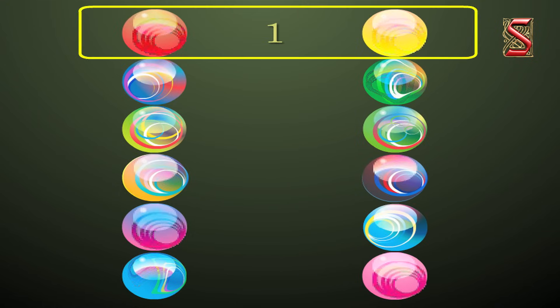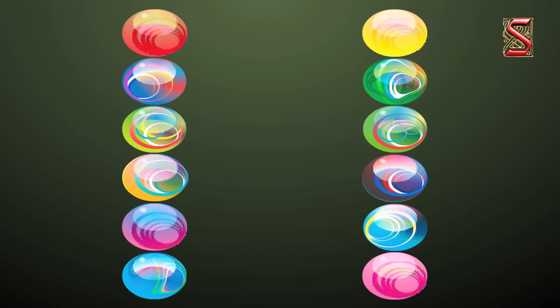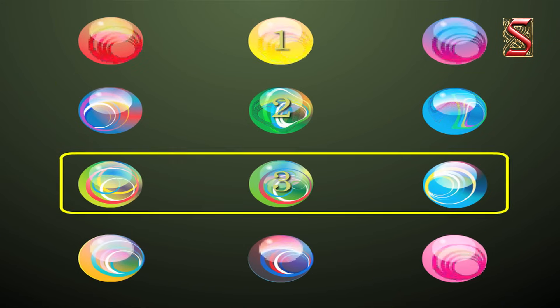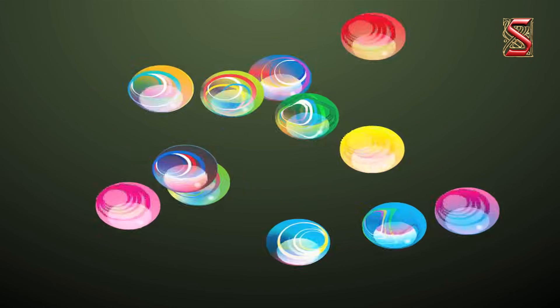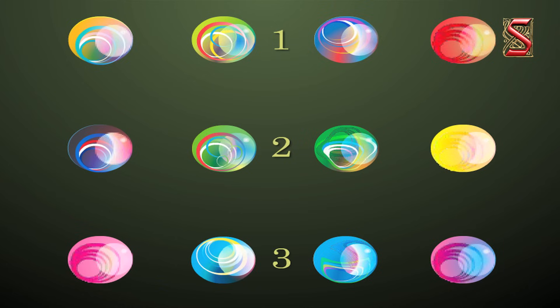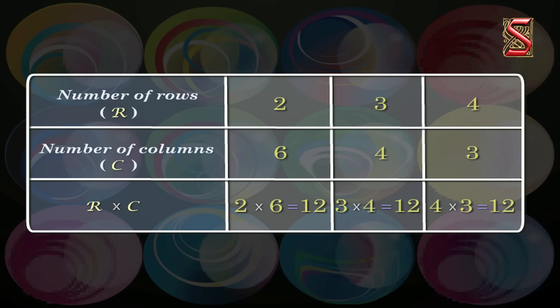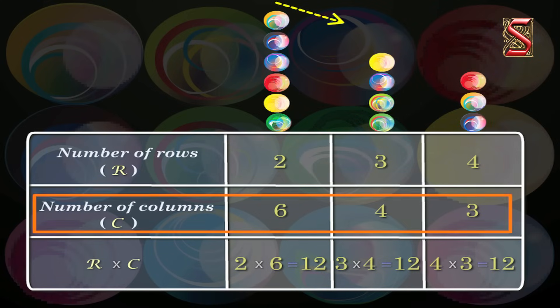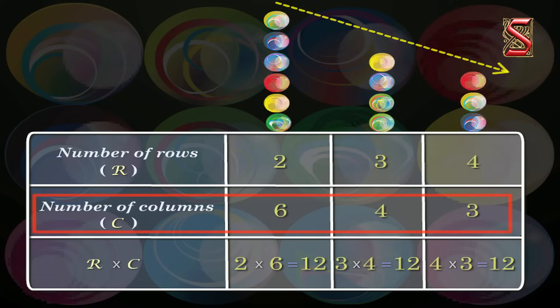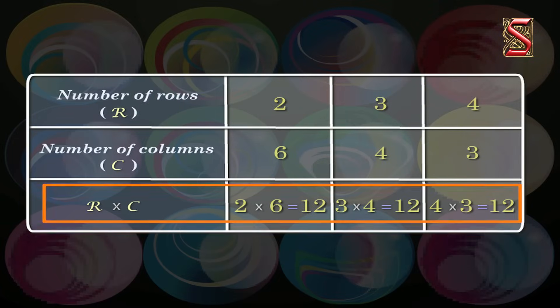Look at this activity. Twelve marbles can be arranged in 6 rows and 2 columns, or in 4 rows and 3 columns, or in 3 rows and 4 columns. Looking at the table for the arrangement of marbles, we observe that as the number of rows R increases, the number of columns C decreases, and R into C is always constant.